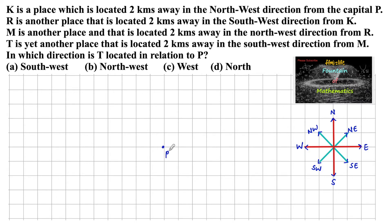Let us look at this. P is one place. Now let us understand the directions: north, south, east, and west. Between north and east we find northeast, and between north and west we find northwest. Between south and west we find southwest, and between east and south we find southeast.